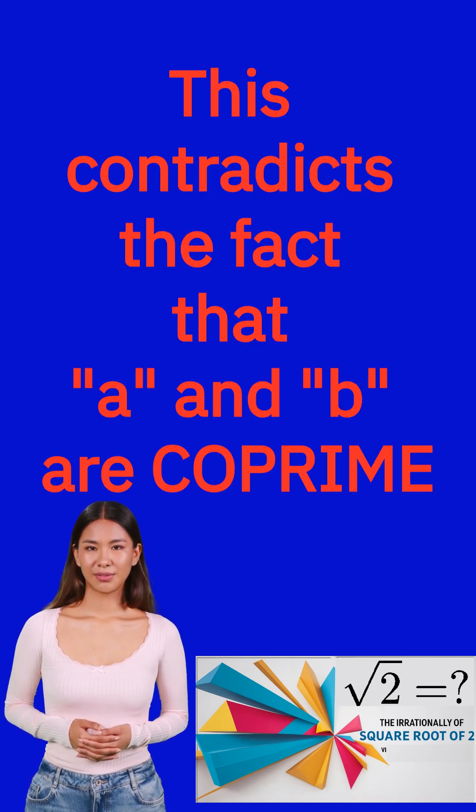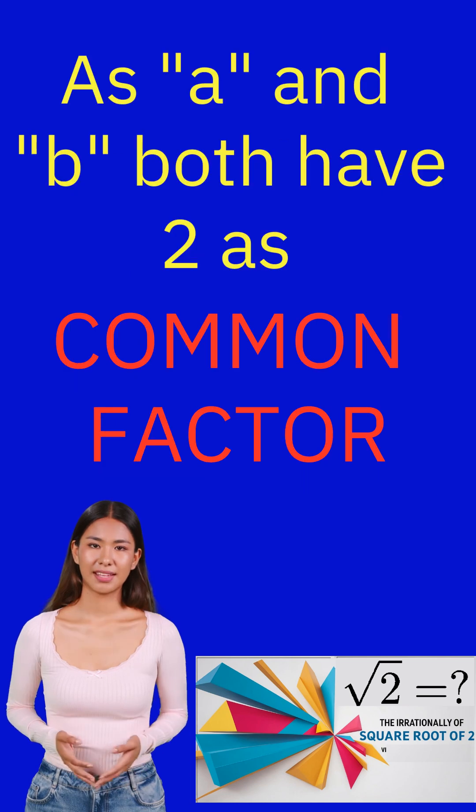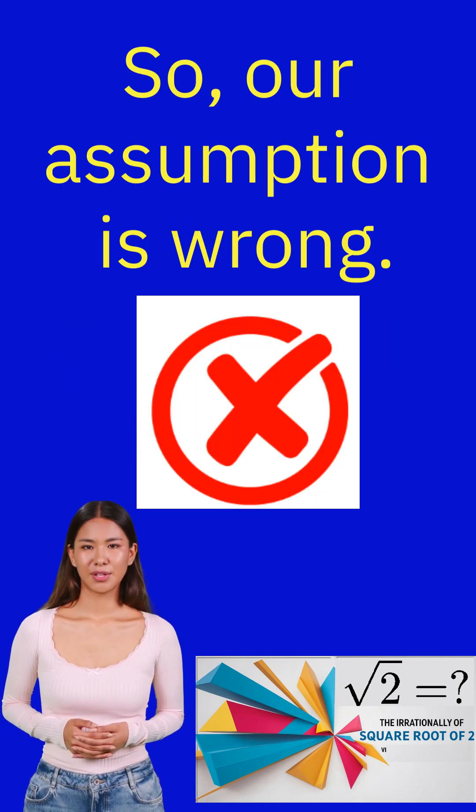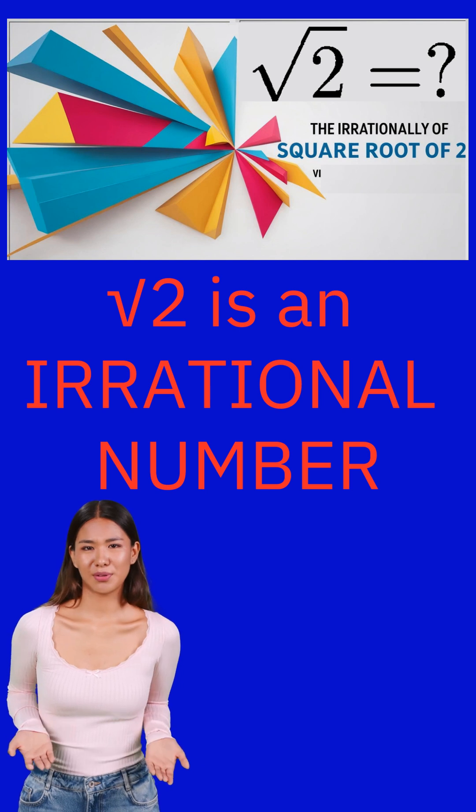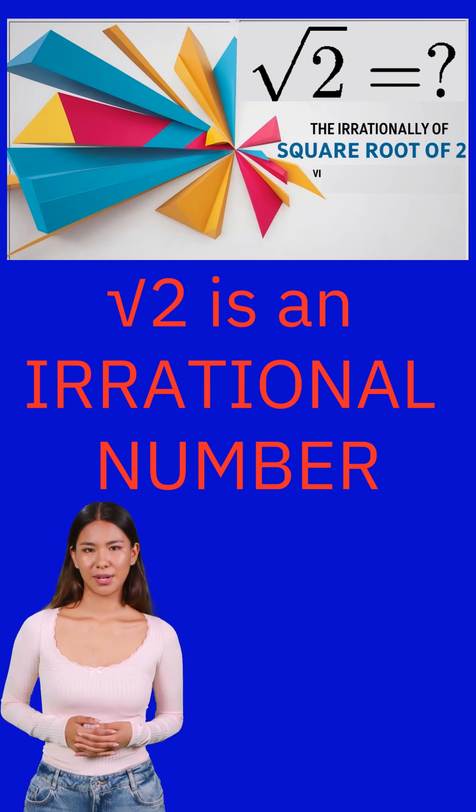So this contradicts the fact that a and b are coprime, as a and b both have 2 as a common factor. So our assumption is wrong. √2 cannot be rational. √2 is an irrational number.